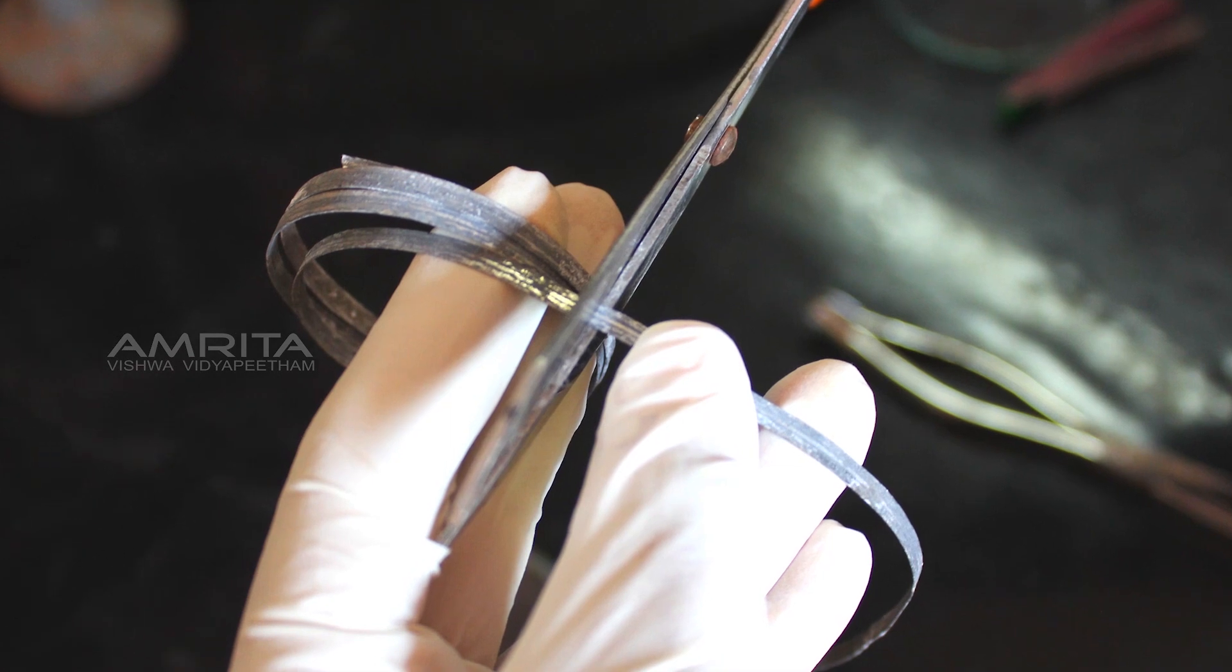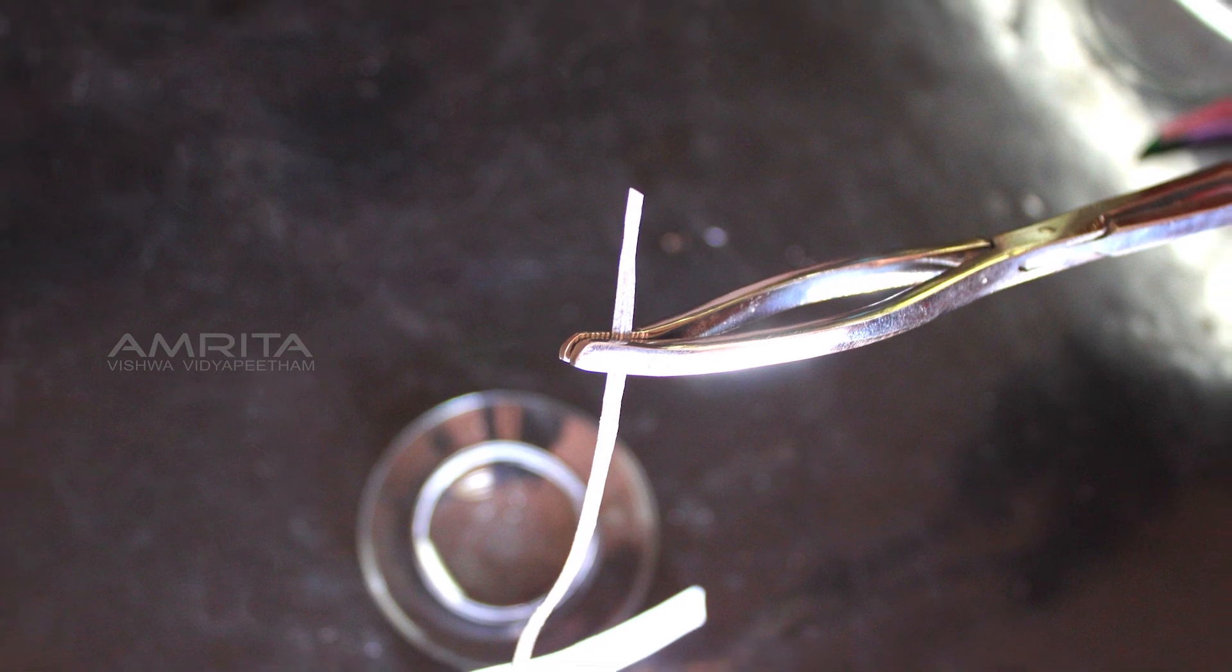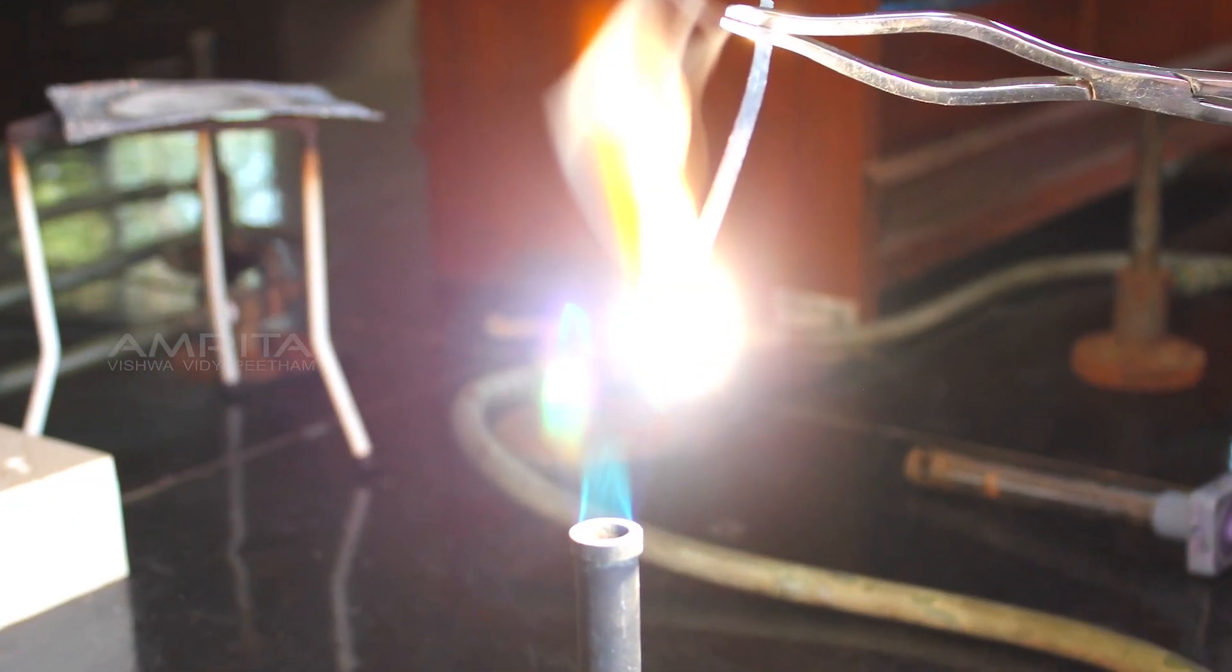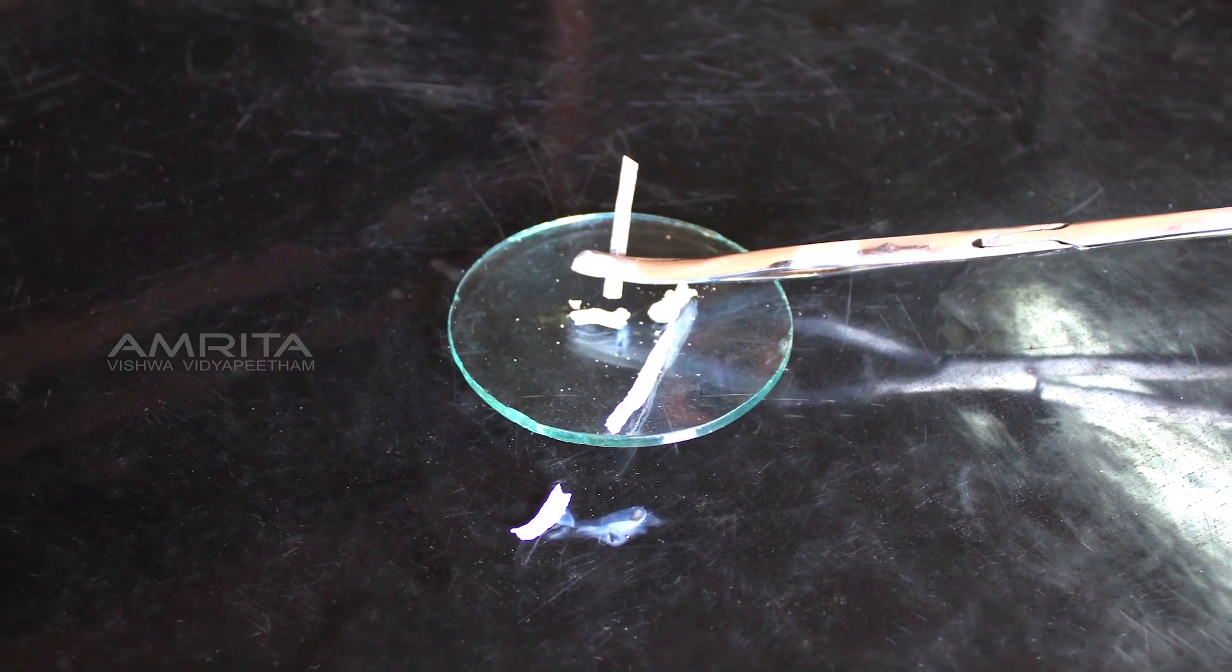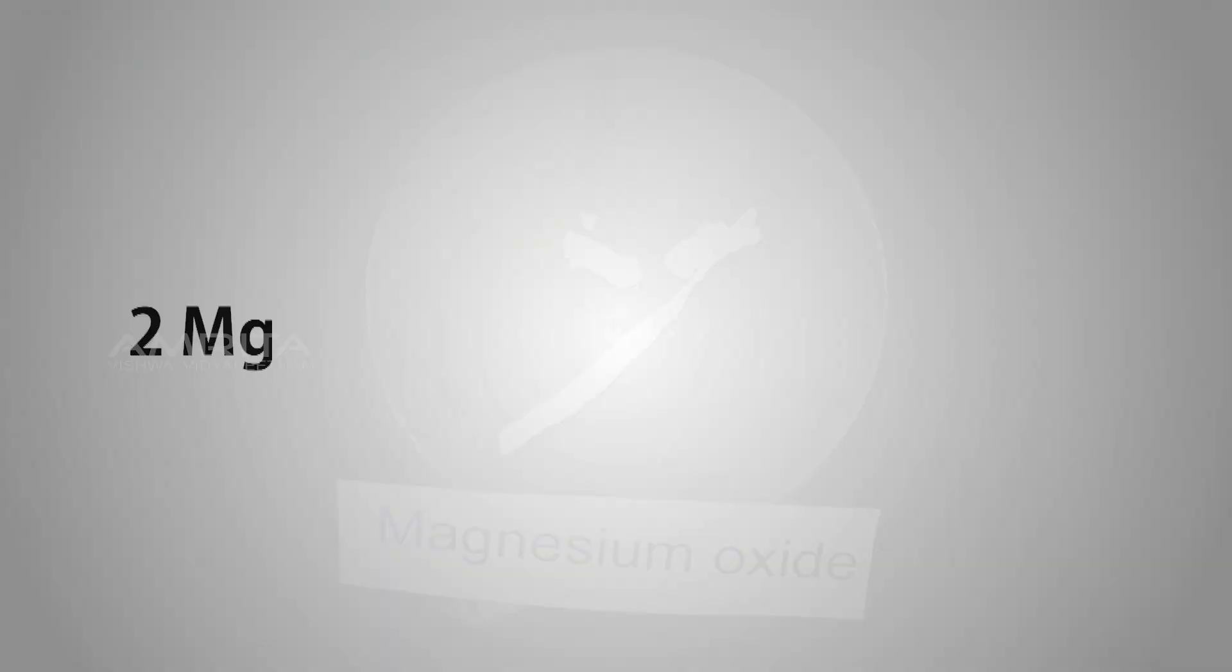Cut a piece of magnesium ribbon and hold it using a pair of tongs. Flame this ribbon in the Bunsen burner. Collect the burnt ash in a watch glass and label it as magnesium oxide. This is a chemical reaction as oxygen and magnesium come together to form magnesium oxide.